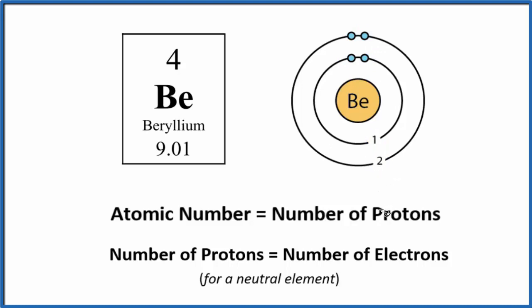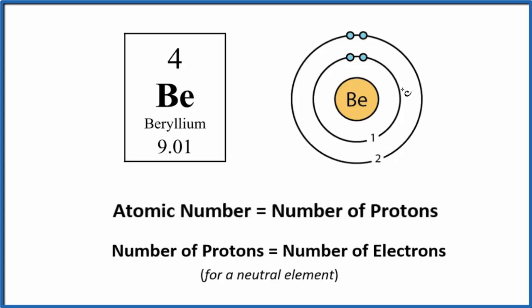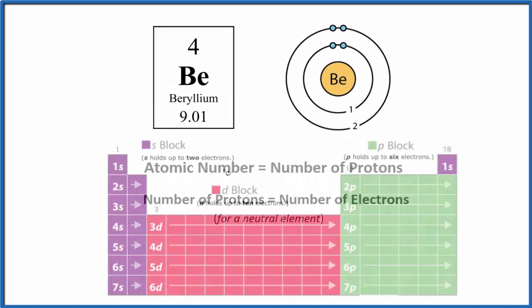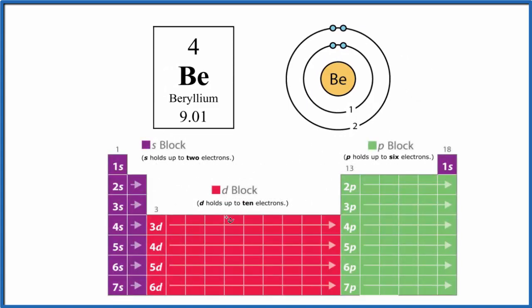Let's take a look at the periodic table to figure out where these electrons go in our Bohr model. The periodic table shows us where the electrons are. The first period is the first energy level or first shell, which has two electrons.